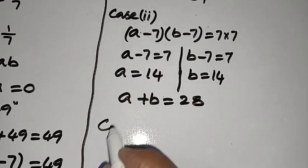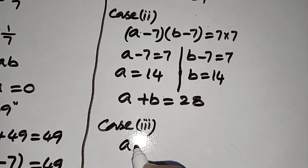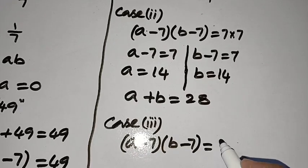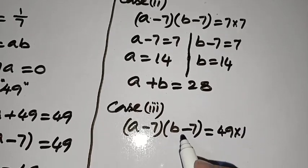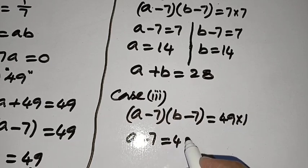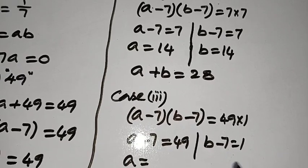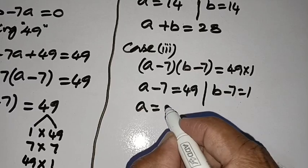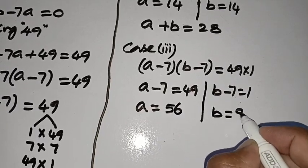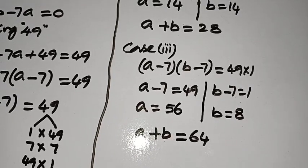In Case 3, A minus 7 times B minus 7 equals 49 times 1. So A minus 7 equals 49 and B minus 7 equals 1, giving A equals 56 and B equals 8. So in this case A plus B is again 64.